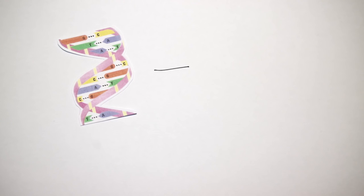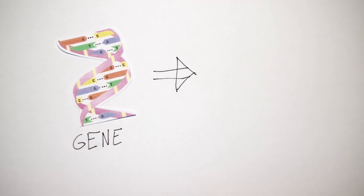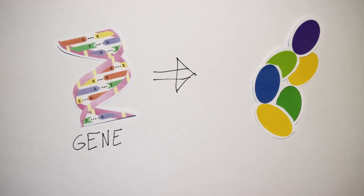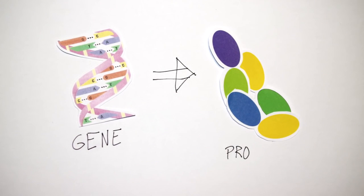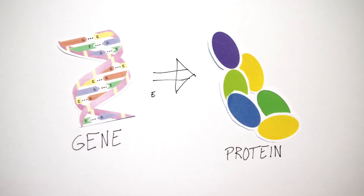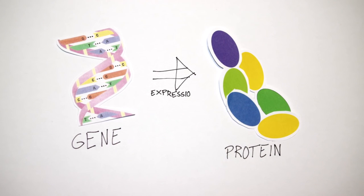Just like letters in our words, the different types of nucleotides can be rearranged to form different sequences. Some of these bits of DNA, the genes, contain the information to produce specific proteins. And when they are produced, the gene is being expressed.